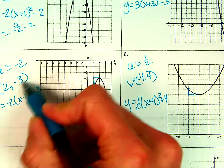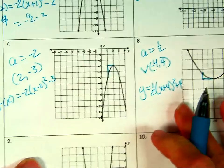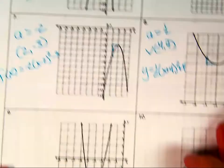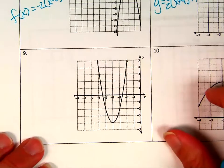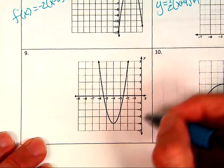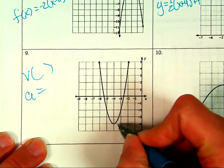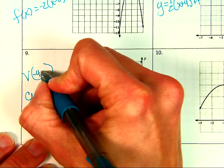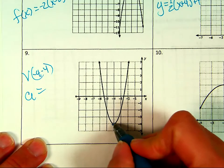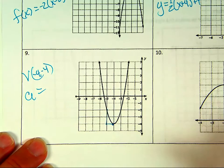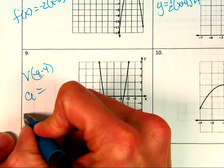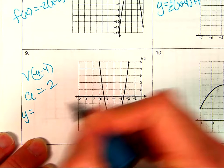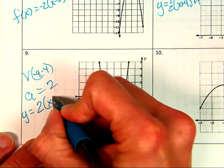This is all the information I need: A and the vertex. So this just makes it a lot easier if you notice these patterns. Vertex is (−4, −4), and A is over 1 up 2, so A = 2, opens up. Y = 2(x + 4)² − 4.